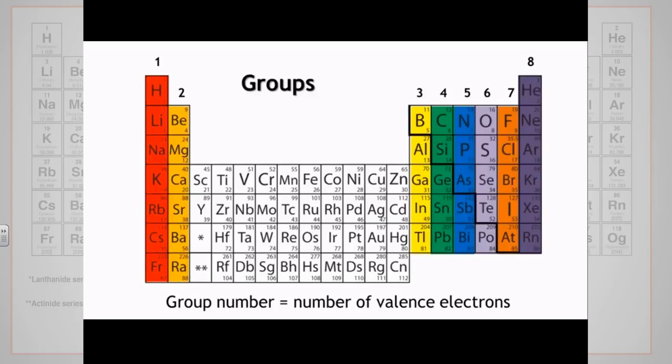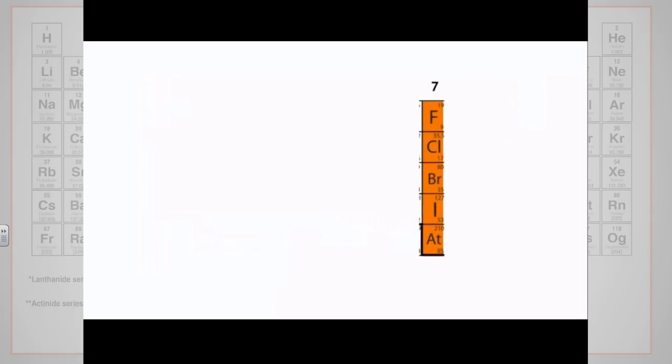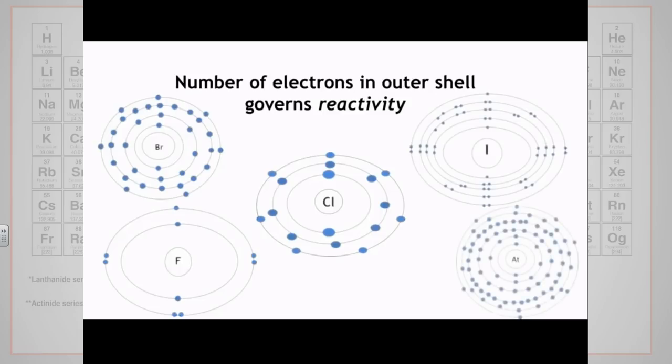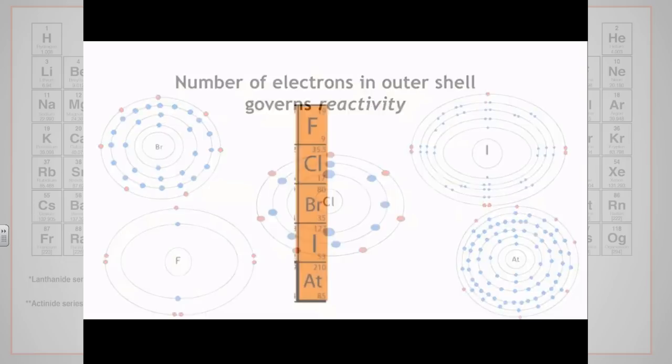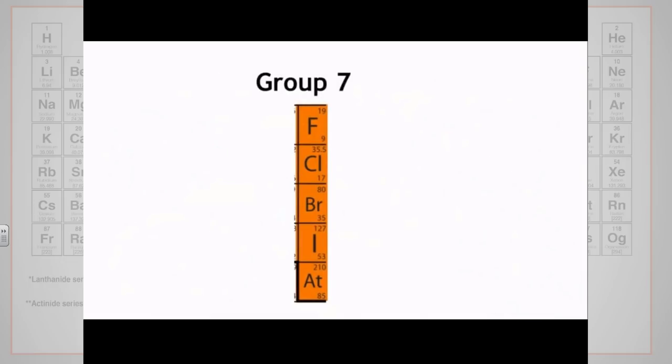The group number can tell you how many electrons are in this shell. For example, let's look at group seven. Fluorine, chlorine, iodine, bromine, and astatine. They all have seven electrons in their outermost shell, and all exhibit similar chemical characteristics. The properties show a gradual change going down the group, as we go from period to period. So if we look at group seven again, we can see that they are each in a different period in the periodic table.